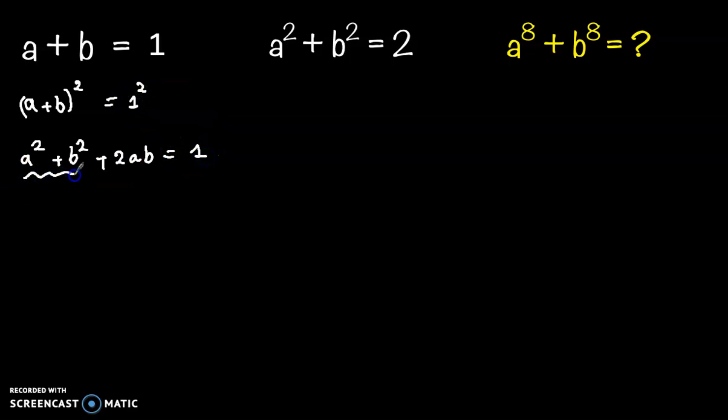Now a² plus b² equals 2, so we have 2 plus 2ab equals 1. Subtract 2 from both sides, so 2ab equals minus 1, divided by 2, so ab equals minus 1 over 2.